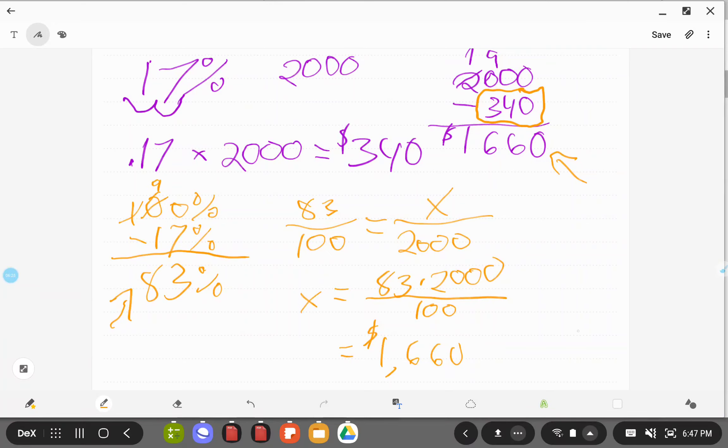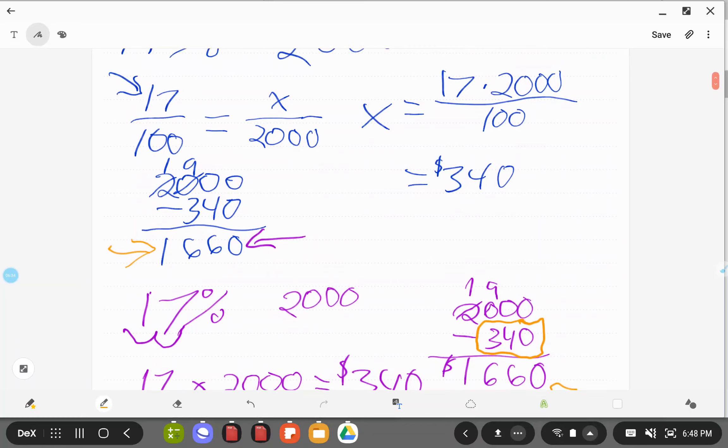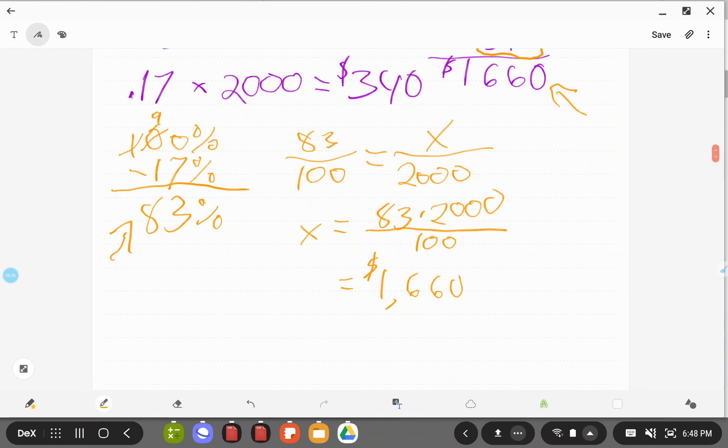Down here on the bottom, we never saw how much money the government actually took. So we didn't see the 340. If you want to know how much money the government actually took, these ways might be better for you, because you actually get to see that they took $340. Down here, all you're left with is the total.